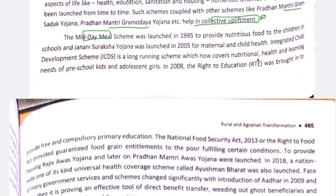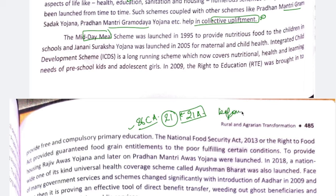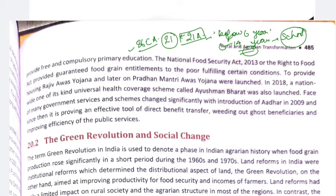The Midday Meal Scheme provided nutritious food for children. The Janani Suraksha Yojana, launched in 2005, focused on maternal and child health. The Integrated Child Development Scheme covered nutrition, health, and learning needs of preschool kids, adolescents, and girls. In 2009, the Right to Education Act brought free and compulsory primary education, arising from the 86th Constitutional Amendment Act and Article 21A, which provides free and compulsory education to children aged 6 to 14. The National Food Security Act guaranteed food grain entitlements to the poor.